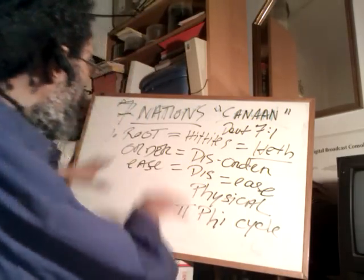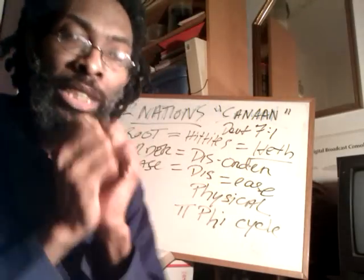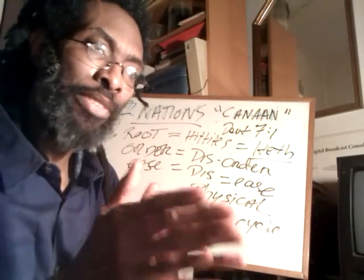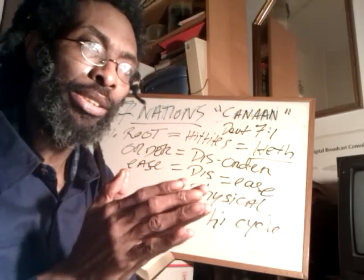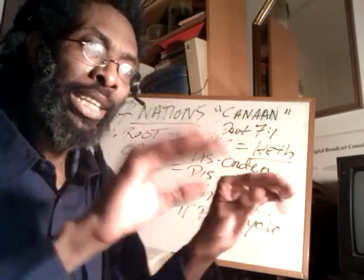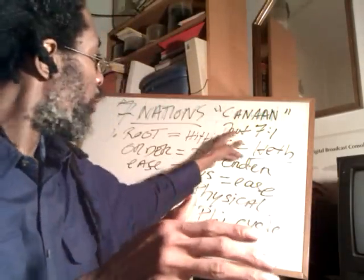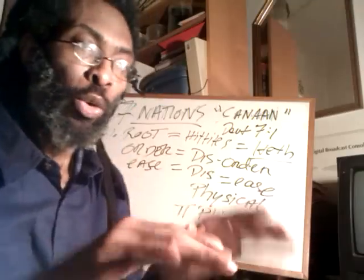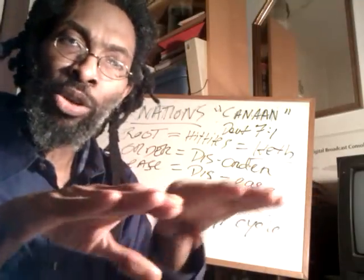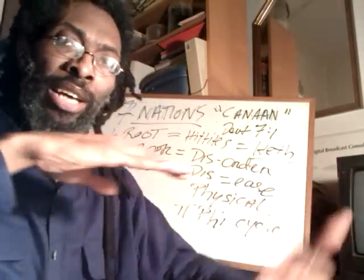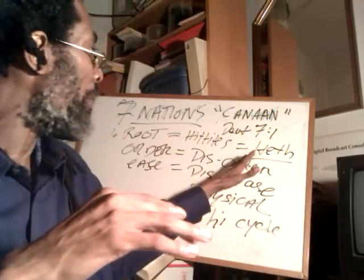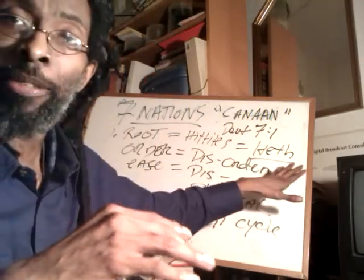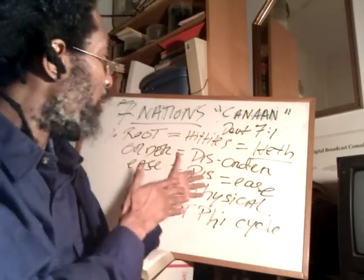We were meditating and said: wait, there are seven nations here with a link to the seven chakras and the seven seals. If we study each of the seven nations in Deuteronomy 7:1, we find a correspondence with the seven seals and the seven chakras. We start with the first one mentioned: the Hittites.